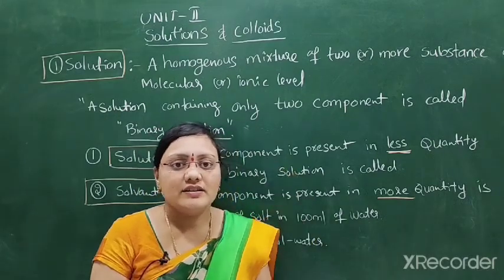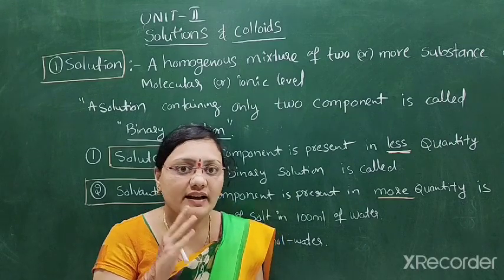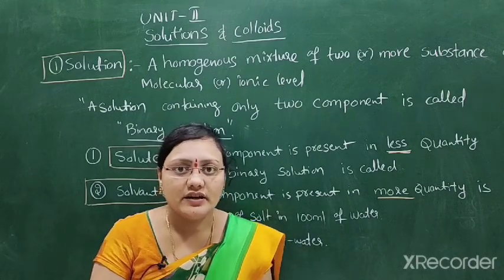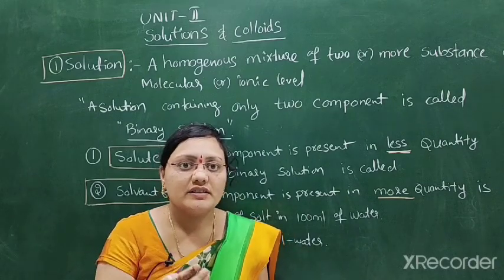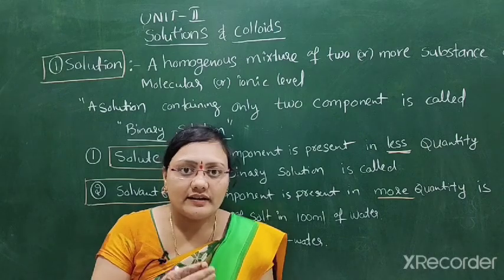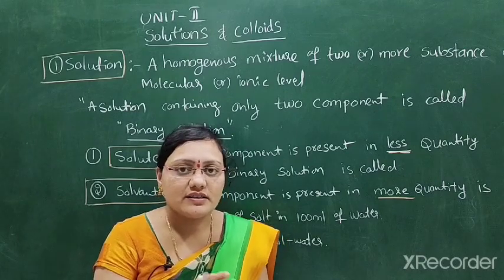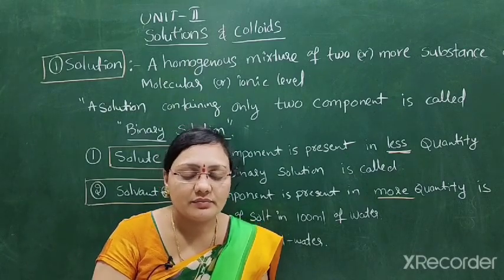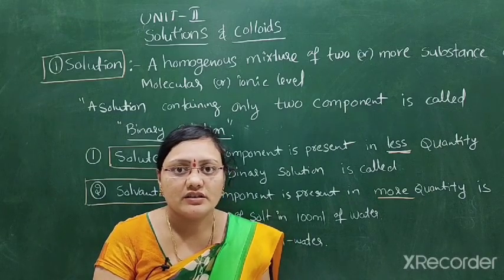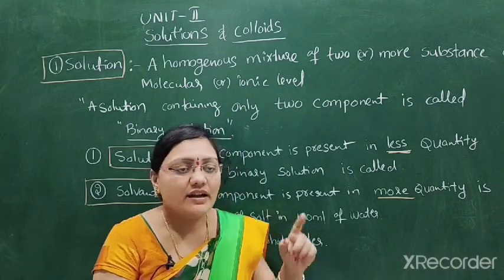This is the first unit: Fundamentals of Chemistry. This unit covers three chapters — atomic structure, chemical bond, and oxidation and reduction. Atomic structure includes Bohr's theory, atomic number, mass number, Aufbau principle, Pauli's rule, and orbitals and shape of orbitals. Chemical bond covers ionic bond, covalent bond, and coordinate covalent bond. Oxidation and reduction covers what is oxidation, reduction, oxidation number, and calculations. That is the first unit syllabus.